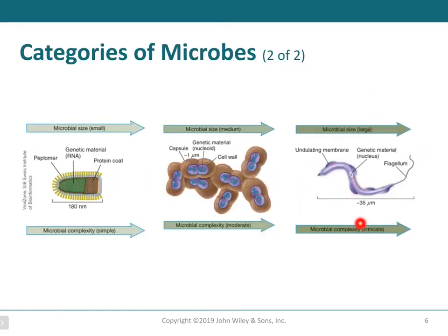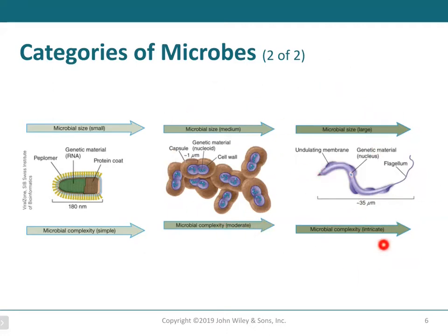The larger, more complex microorganisms are usually eukaryotic cells — still microbes, but around 35 micrometers in size, compared to one micrometer for prokaryotes. Prokaryotes are in the smaller category, but eukaryotes are in this larger category. Remember, eukaryotes are the ones that have organelles — the nucleus and membrane-bound organelles.